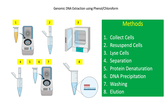For step two, add 700 microliters of lysis buffer into the cell pellet and resuspend cells by pipetting in and out. Then add 10 microliters of RNase. Incubate at 37 degrees Celsius for one hour. This will degrade RNA that would contaminate the DNA extract.